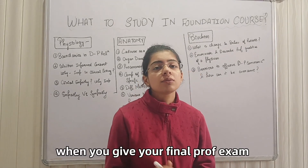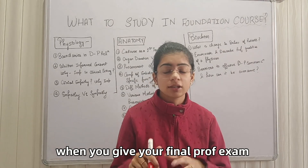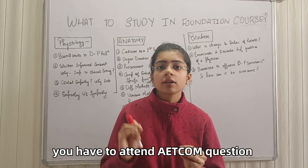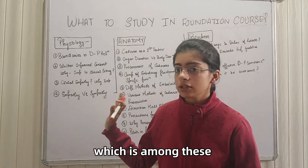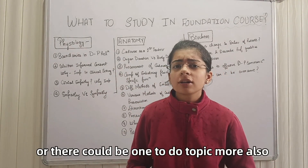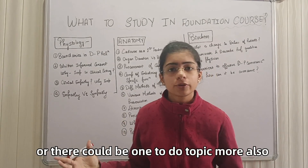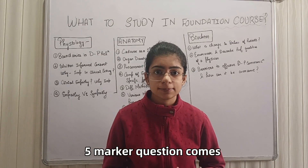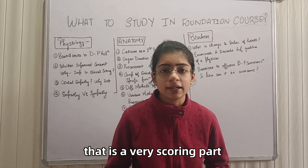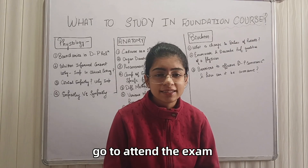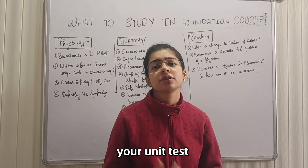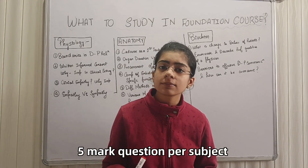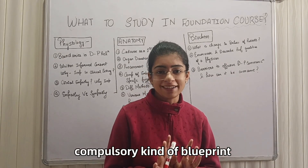When you give your final professional exams — first year, second year, or whichever it is — you have to attempt an ACOM question which comes from among these topics. There could be one to two more topics, but largely this is the whole list from which your exam's ACOM question comes. That is a very scoring part, and it comes in your part test, your unit test, and your mid-sem exams also. A 5-mark ACOM question per subject is like a compulsory part of the blueprint.